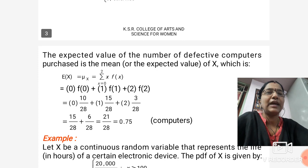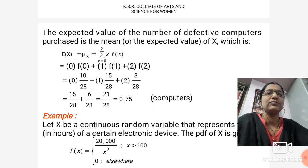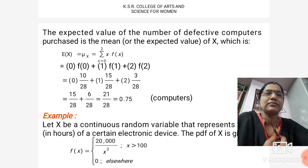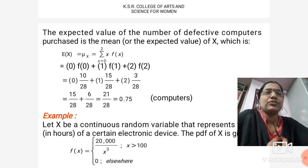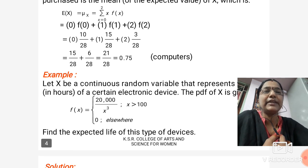The expected value of the number of defective computers purchased is: E(x) = μx = Σ x·f(x) for x from 0 to 2. So we have 0·f(0) + 1·f(1) + 2·f(2). The values are f(0) = 10/28, f(1) = 15/28, and f(2) = 3/28. Finally, the solution is 0.75 computers.